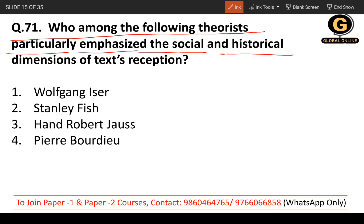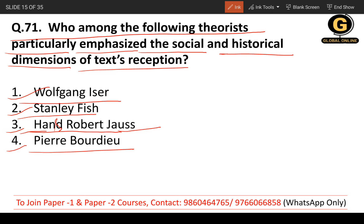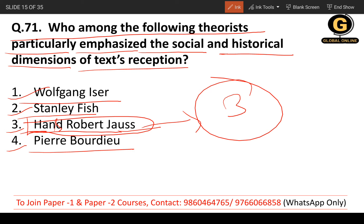Question 71: Who among the following theorists particularly emphasized the social and historical dimensions of text reception? The options are Wolfgang Iser, Stanley Fish, Hans Robert Jauss, and Pierre Bourdieu. The correct answer is Hans Robert Jauss — the third option — who is associated with reception theory.